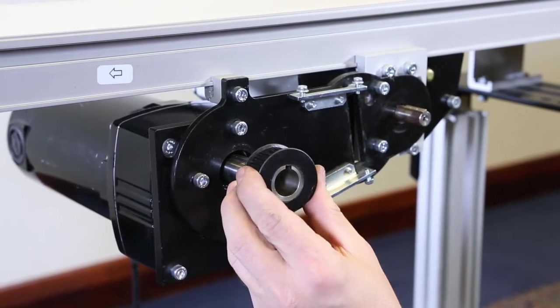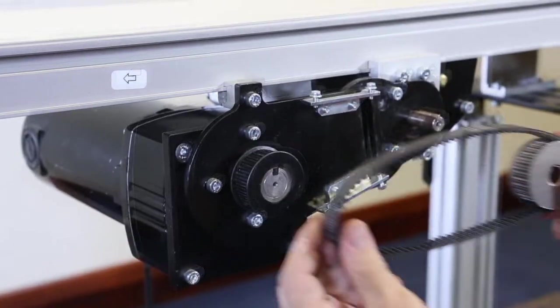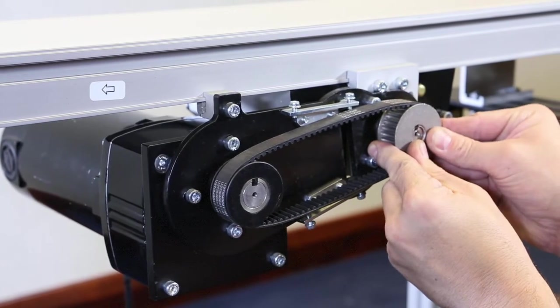Install the drive pulley onto the spindle shaft. Wrap the timing belt around the driven pulley and drive pulley and place the driven pulley on the drive shaft.